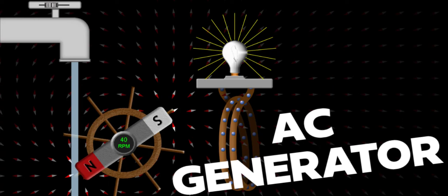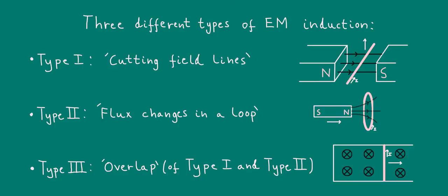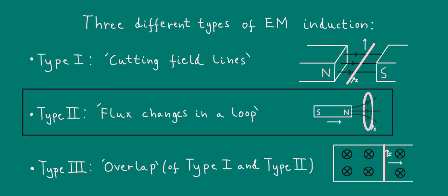However, that was a DC or direct current generator, whereas here we'll be discussing an AC or alternating current generator. As I explained in the intro video of this playlist, I've broken electromagnetic induction up into three different types. The AC generator is an example of type 2, flux changes in a loop.